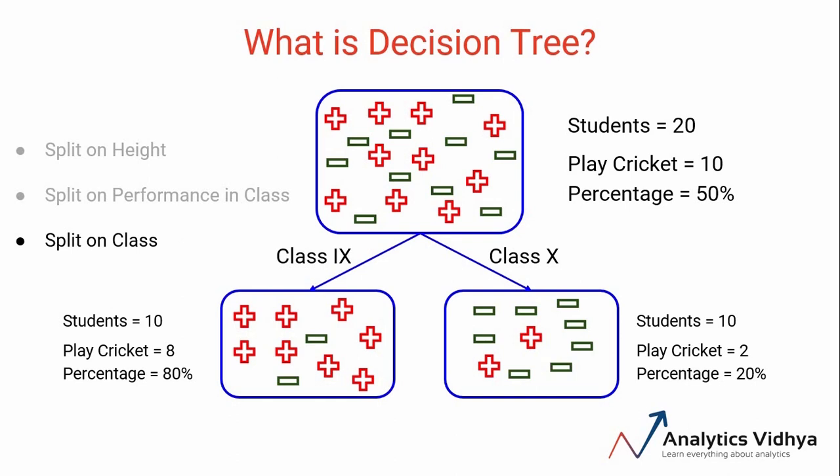In class 9, 8 out of 10 are playing cricket which is exactly 80 percent, whereas in class 10 only 2 out of 10 are playing, which comes out to be 20 percent. This is how we can split the data based on the features available to us. If you would have noticed, we've created three different decision trees till now.